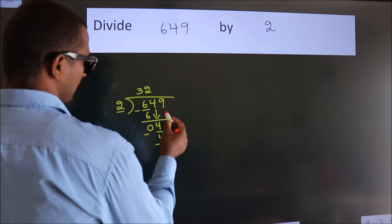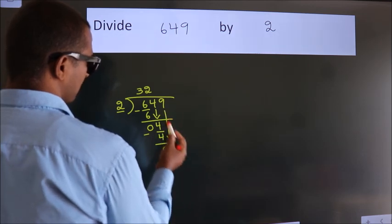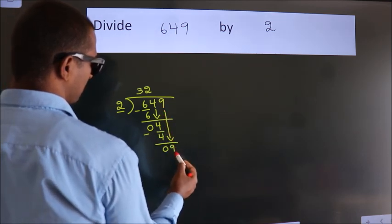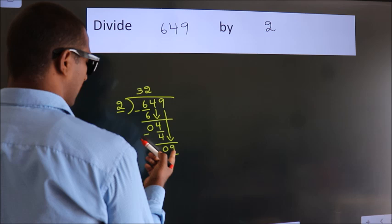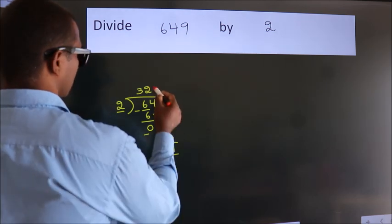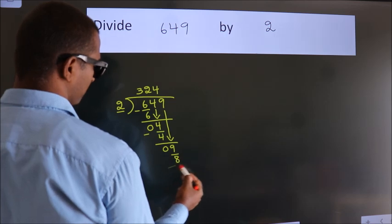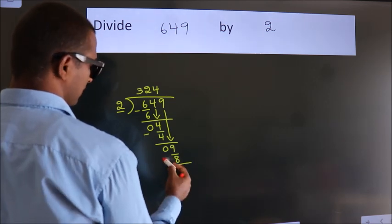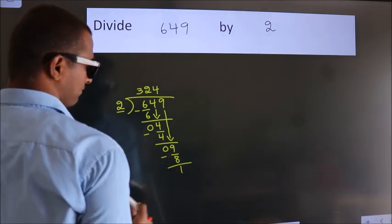After this, bring down the beside number, so 9 down. A number close to 9 in the 2 table is 2 times 4, which is 8. Now we subtract. We get 1.